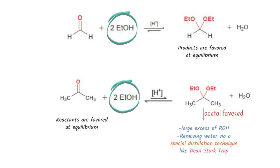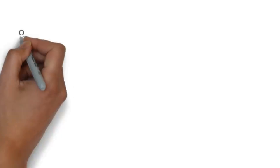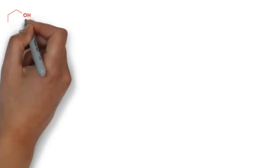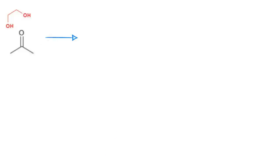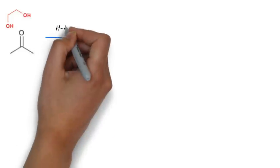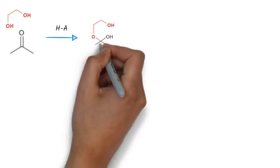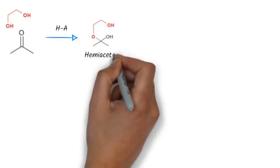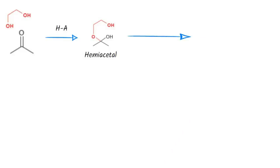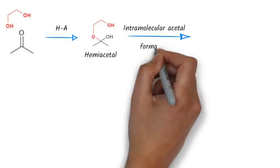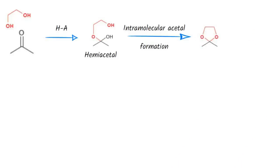Notice that acetal formation requires two equivalents of the alcohol. That is, two molecules of ROH are required for every molecule of ketone. Alternatively, a compound containing two OH groups can be used, forming a cyclic acetal. This ketone on reaction with ethylene glycol under acidic conditions first forms hemiacetal, which then undergoes intramolecular acetal formation with the second OH group to form a cyclic acetal.